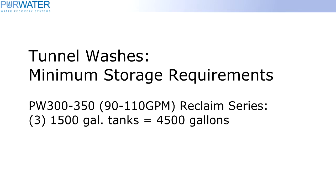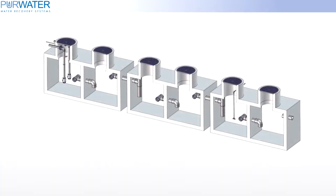For tunnel washes, using a PW300 or PW350, we would require a minimum of 4,500 gallons, which can be achieved by using three 1,500-gallon tanks. For a three-tank setup, the only difference between a two-tank and a three-tank setup is one tank is added to the middle. The recirculation line for a three-tank would be like the two-tank setup, with the line plumbed to the first tank, second chamber.